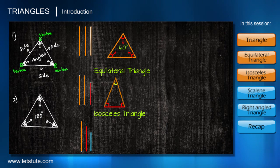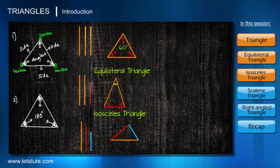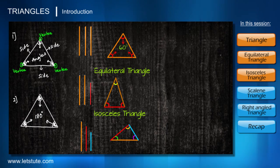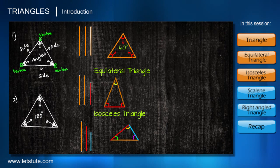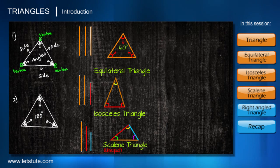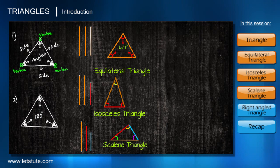Now let's take three different, unequal sides and form a triangle. When three sides are not equal to each other, the three angles formed will also not be equal to each other. Such triangles are called scalene triangles — the meaning of the term 'scalene' itself is unequal.